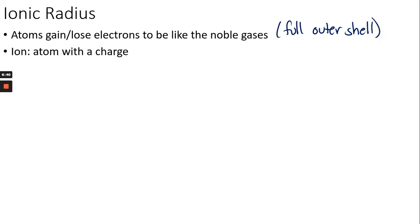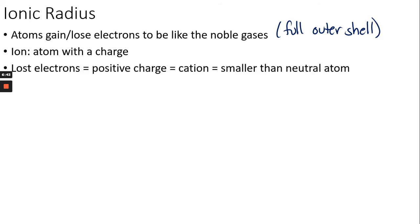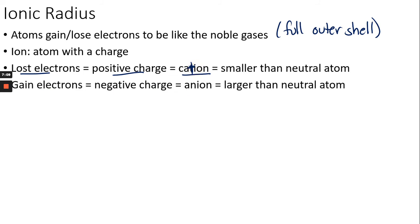When you lose electrons you form a positive charge — more protons than electrons — and it's called a cation. You can use the letter T as a positive sign to help remember cation is positive. When you lose electrons the atom shrinks in size because the protons can attract the remaining electrons more strongly. When you gain electrons you form a negative charge, called an anion. The atom becomes larger than normal because the extra negative electrons are harder for the positive nucleus to attract.